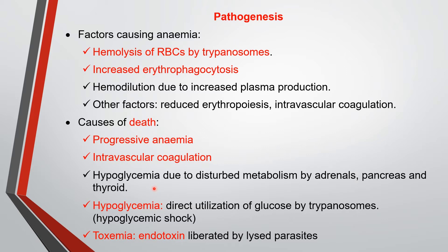Hypoglycemia occurs due to two reasons. One is disturbed metabolism by endocrine glands, especially the adrenal glands, pancreas, and thyroid glands. Another important cause is direct utilization of glucose by trypanosomes. Trypanosomes multiply very fast by binary fission and consume a lot of glucose, leading to hypoglycemia and hypoglycemic shock. One reason for circling is hypoglycemia; another reason is that trypanosomes block the capillaries of the brain.